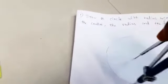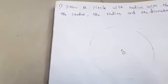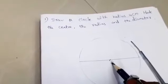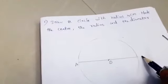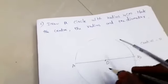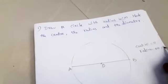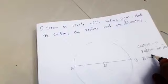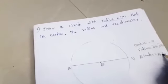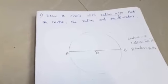Draw the circle. The compass pointer position is denoted as O — that point is called O. Draw the circle. It comes to four centimeters. Mark the center O, radius OA, and diameter AB. Center is O. Radius equals OA and OB. Diameter equals AB. Draw the circle and mark the center, radius, and diameter.